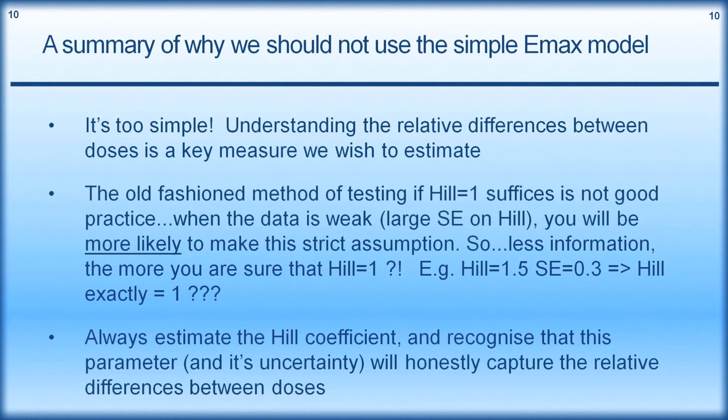So a summary of why we should not use the simple Emax model. Essentially, it's just too simple. Understanding the relative differences between doses is a key measure we wish to estimate. By fixing the Hill coefficient to 1, we're saying we know something when in fact we don't. I think this old-fashioned method of testing if the Hill coefficient is equal to 1 is not good practice. When the data is weak, so when we have a large standard error on the Hill coefficient, we'd be more likely to make this strict assumption. So this is paradoxical. We're saying when we have less information, we're more sure that the Hill coefficient is 1. And again, here I'm just giving this idea of a Hill coefficient with a standard error. If we compare this versus 1, we're going to conclude that it is indeed exactly equal to 1. That's not a good conclusion.